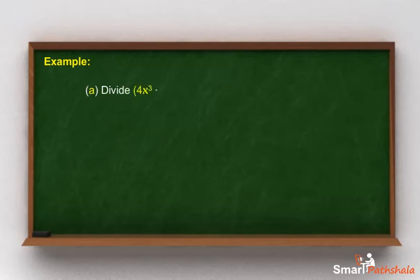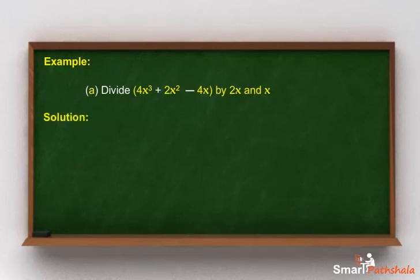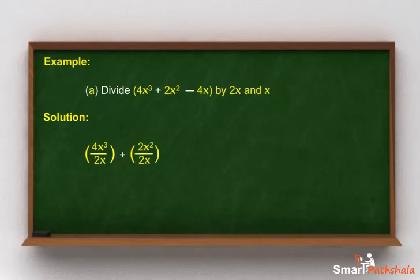Divide 4x cubed plus 2x squared minus 4x by 2x. Solution: we will divide each term of the polynomial by the monomial. 4x cubed divided by 2x, plus 2x squared divided by 2x, minus 4x divided by 2x, is equal to 2x squared plus x minus 2.